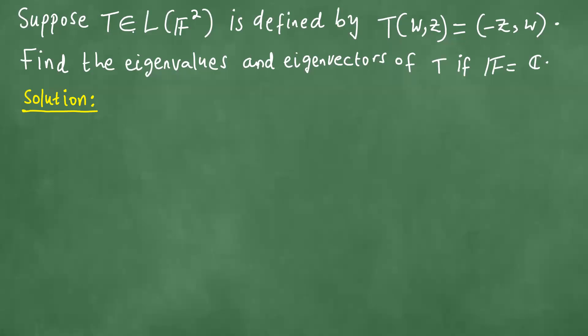Suppose T is an element of L(F²) defined by T(w,z) = (-z,w). Find the eigenvalues and eigenvectors of T if F, the field, equals C, the set of all complex numbers.